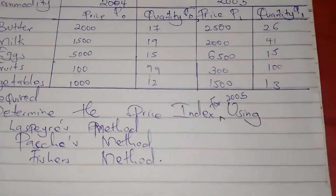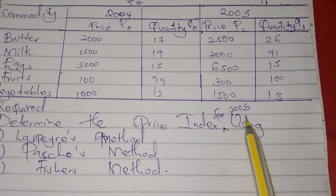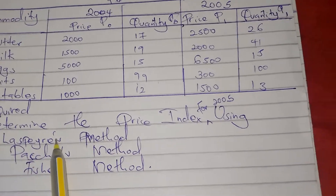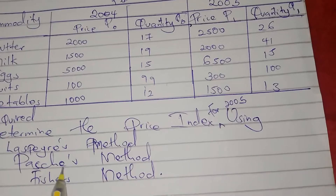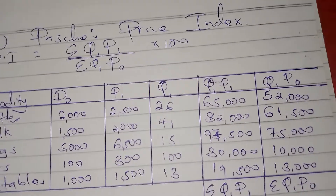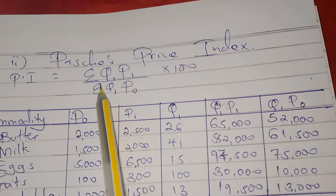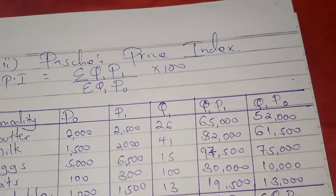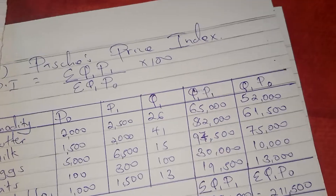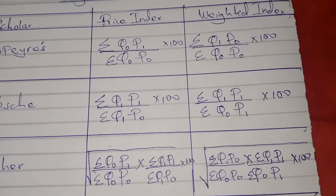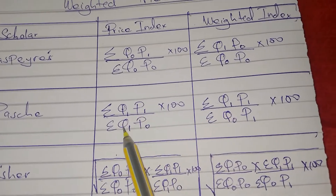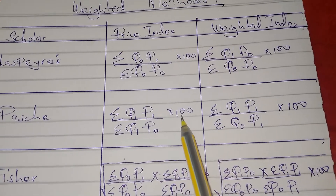According to our question, we need to determine the price index for 2005 using the Paasche method. In the previous video we looked at the first method which is Laspeyres, so now we are going to look at the Paasche method. The formula for the Paasche price index is: summation of q1×p1 divided by summation of q1×p0, times 100.